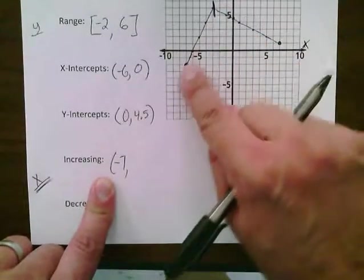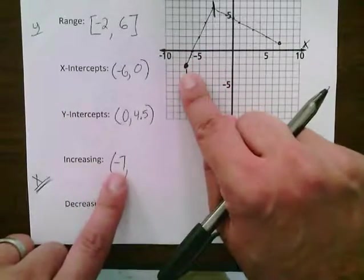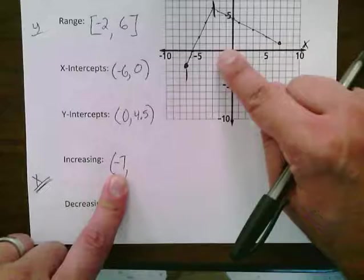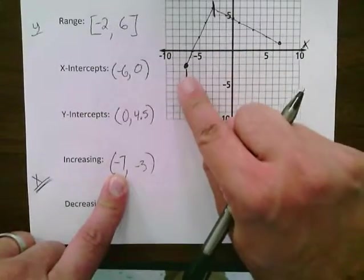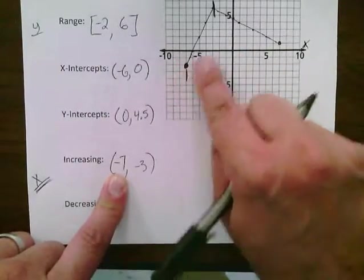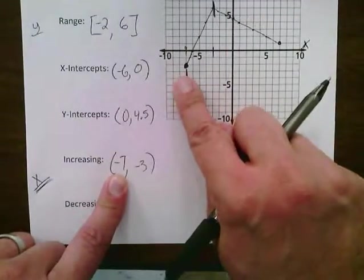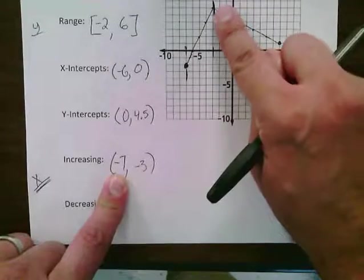So from here to here, I'm increasing. This is when x is negative seven and I finally hit this peak and that's when x is negative three. So from negative seven to negative three, that's the interval in which I'm increasing. So from this point to this point.